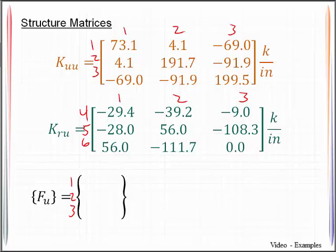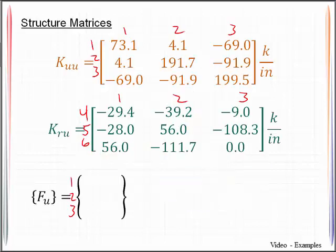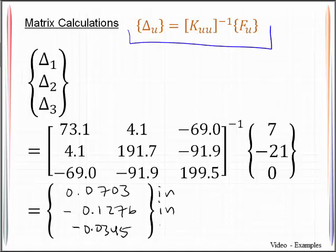So let's look back at the original picture. We have 7 kips in degree of freedom 1, 21 kips in degree of freedom 2, and nothing in degree of freedom 3. So we've got 7 kips, negative 21 kips, 0 kips, carry out this matrix multiplication, and find we get 0.0703 inches, negative 0.1276, negative 0.0345. All of those are in units of inches.